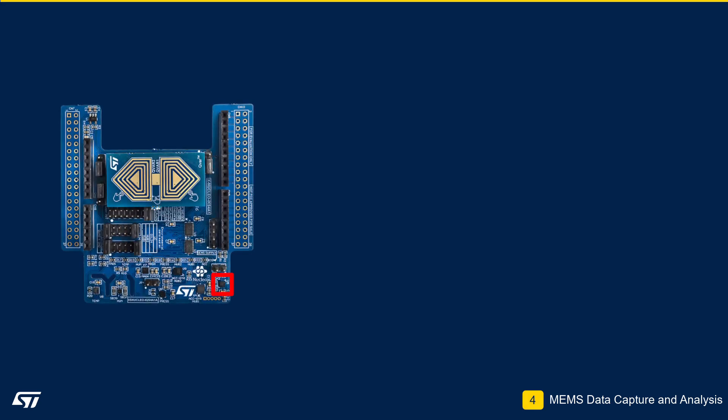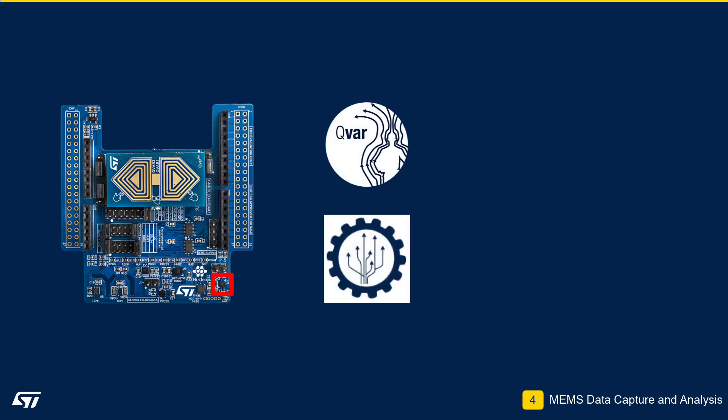The LIS2DUXS12 is an ultra-low power, 3-axis smart digital accelerometer with advanced features such as QVAR electric charge variation detection and a machine learning core. It is capable of sampling data at up to 16 Gs of full scale with supported output data rates from 1.6 Hz to 800 Hz.